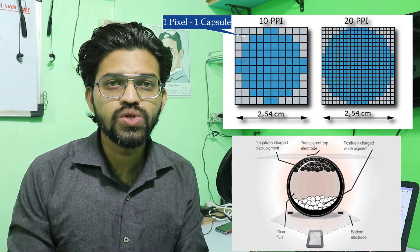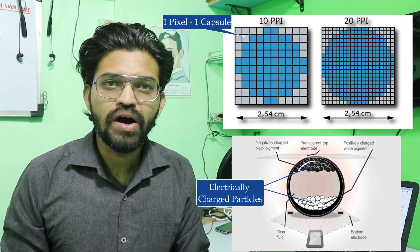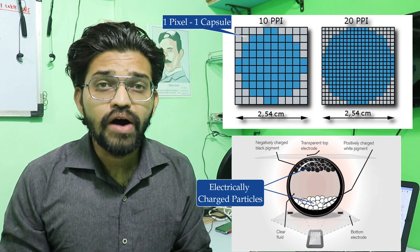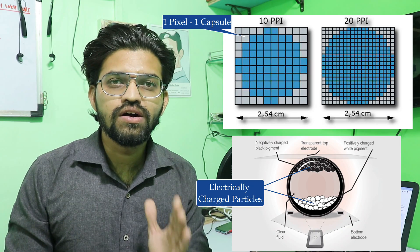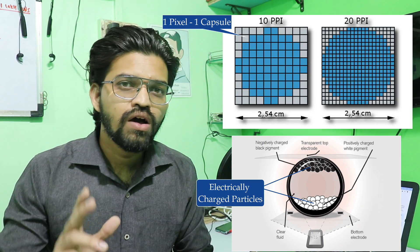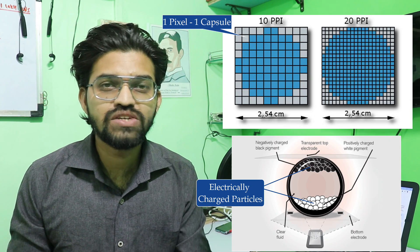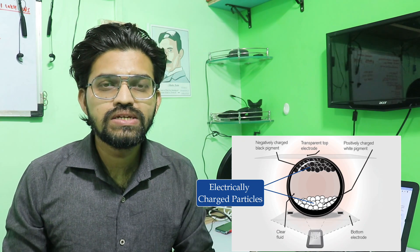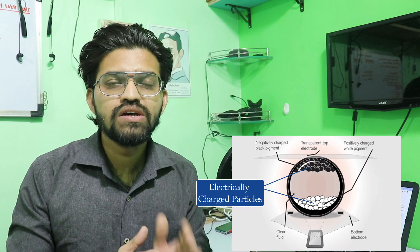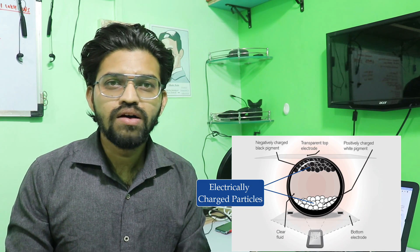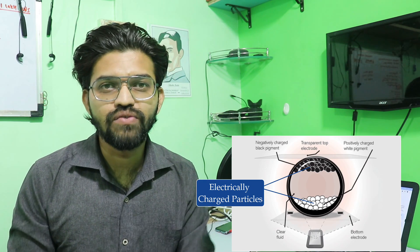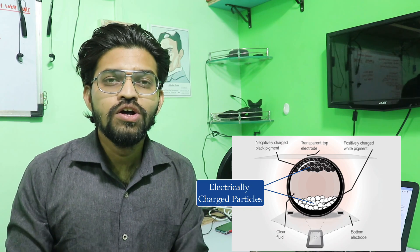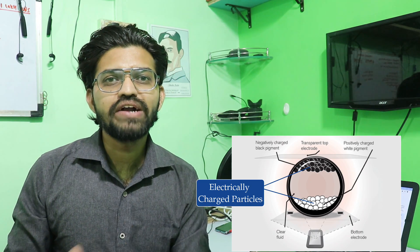Each capsule has a specific structure: inside it there are electrically charged particles. On the top there is one electrode, and on the bottom there is also one electrode. In the Amazon Kindle there are only two colors - white and black. Inside each capsule you can see white particles and black particles. This capsule is filled with a transparent liquid in which the particles float, either at the top or at the bottom.